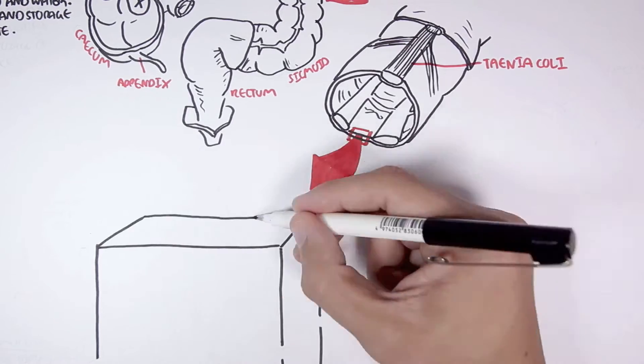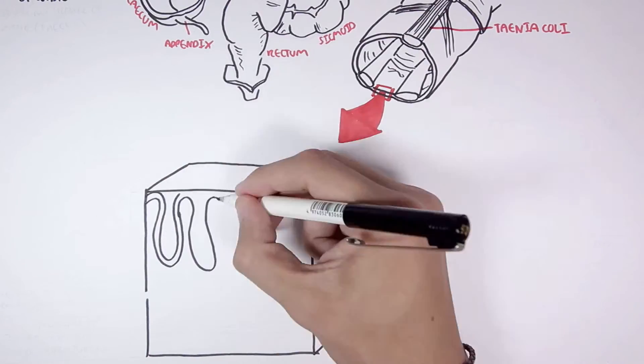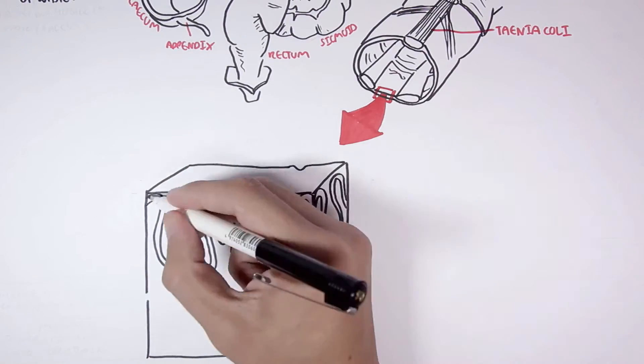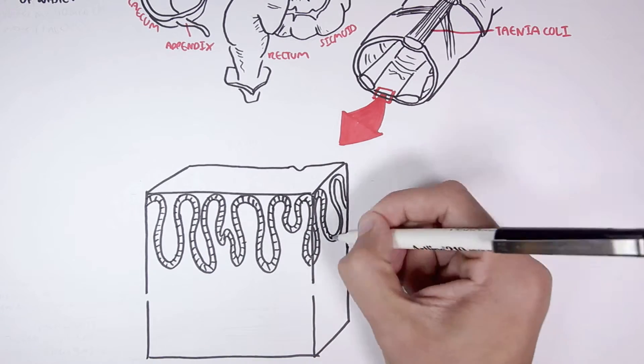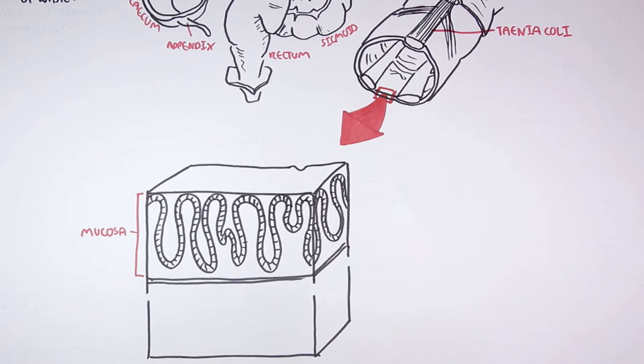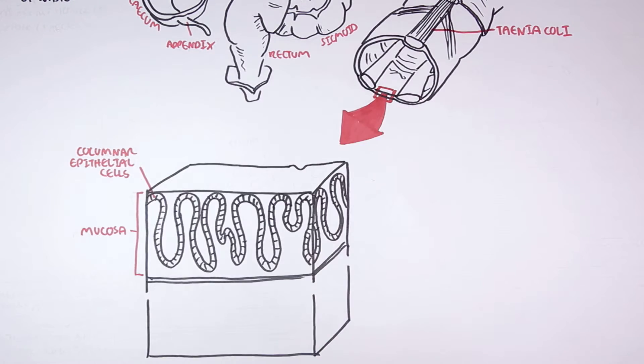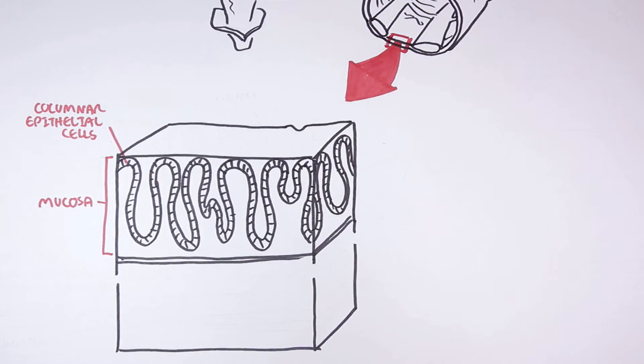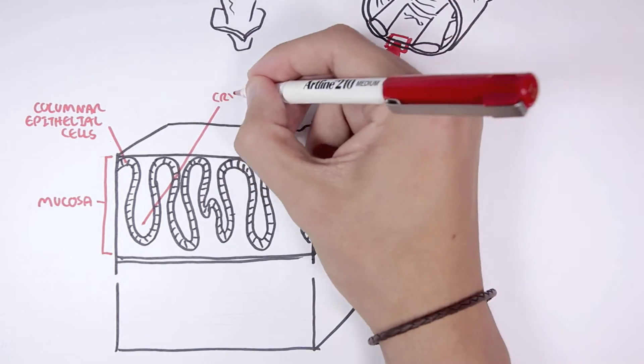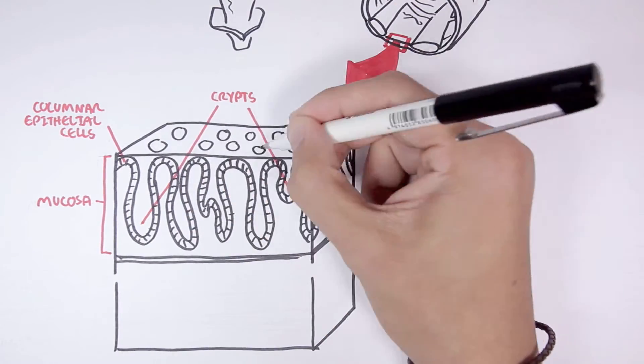Now let's look at the layers of the colon. The very top layer of the colon closest to the lumen is the mucosa layer. These are the colon cells which are mostly columnar epithelial cells, and these cells form crypts.